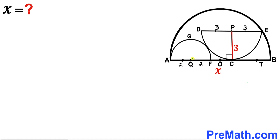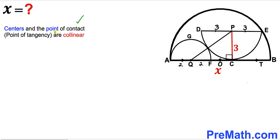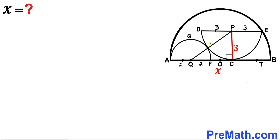In this next step I am going to connect center Q with center P. Recalling the crucial fact: the centers and the point of tangency are collinear. So points P and Q and the point of tangency lie on the very same line. The radius of the medium semicircle is 3 and the radius of the smallest semicircle is 2, so the whole PQ length is 2 plus 3, which equals 5 units.